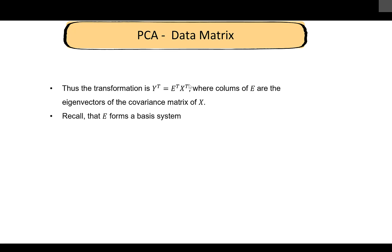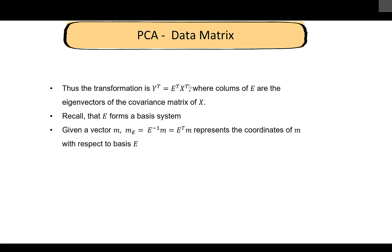From another perspective, E forms a basis system. If we have any vector m and multiply by E-inverse times m, since E is orthogonal we know E-inverse equals E-transpose. This operation represents the coordinates of m with respect to the new basis. Multiplying by the inverse of a basis matrix changes the coordinates of a vector into the new basis.